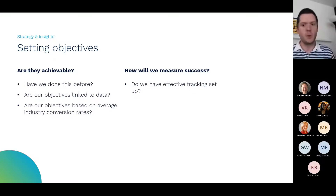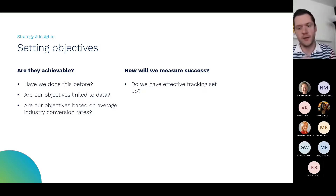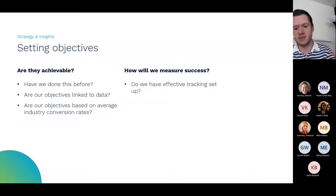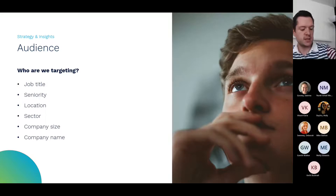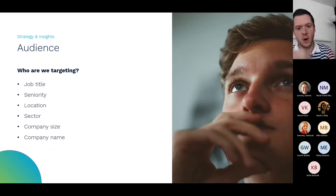In terms of setting objectives, people will be familiar with SMART objectives — the same kind of thing happens here. Are our objectives achievable? How are we going to measure them? What are our objectives based on? Rather than just plucking figures out of the air and saying 'I want to generate a million pounds worth of opportunity,' what are our previous campaign success results like? Is this achievable? Then we look into who we're targeting. These are just some of the more targeted criteria we can use across LinkedIn — job title, location, company names, account-based marketing — we just need to think about exactly who it is we want to get in front of.